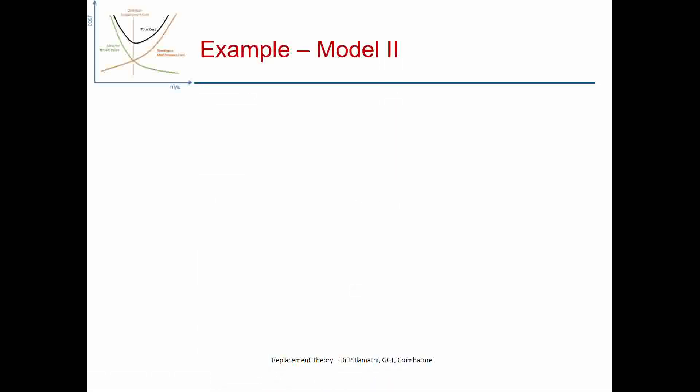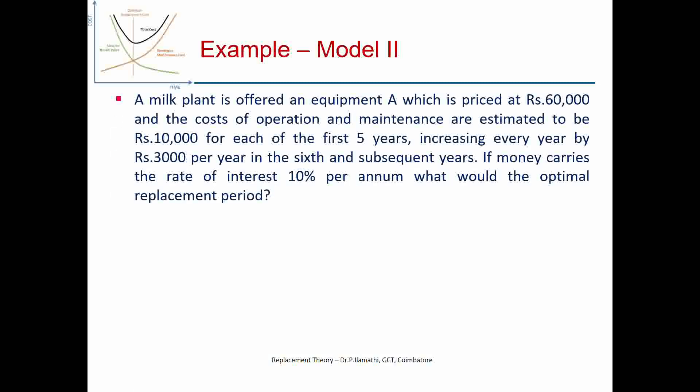We will discuss model 2 with an example. A milk plant is offered equipment A priced at Rs. 60,000. The costs of operation and maintenance are estimated at Rs. 10,000 for each of the first 5 years, increasing every year by Rs. 3,000 per year in the 6th and subsequent years. If money carries an interest rate of 10% per annum, what would be the optimal replacement period? There is no fixed duration given.